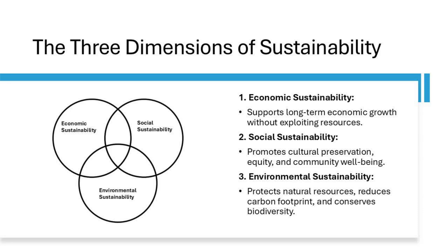For example, ecotourism initiatives often involve strict limits on visitor numbers to fragile areas, ensuring that tourism does not harm the environment it depends on. These three dimensions are deeply interconnected — a sustainable tourism destination is one where economic growth does not compromise social equity or environmental health. Instead, all three dimensions support and reinforce each other, creating a tourism model that benefits everyone involved. By balancing these dimensions, tourism can become a driver of positive change, protecting our planet, enriching communities, and providing meaningful experiences for travelers. This holistic approach is the foundation of all sustainable tourism practices.